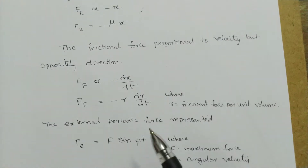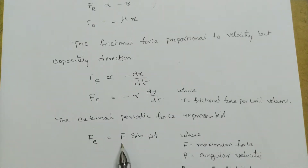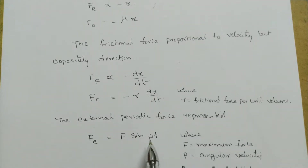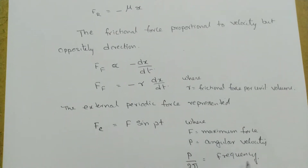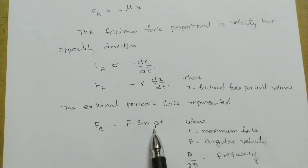The external periodic force is represented by Fe = F sin(pt). This is a simple harmonic equation, where F is the maximum force and sin(pt) is its component. Here p is the angular velocity, and p/2π gives the frequency of the applied force — analogous to y = sin(ωt), where p takes the place of ω.